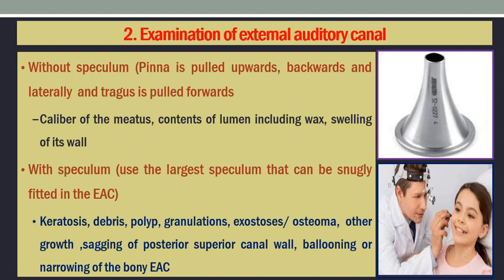You can also see swelling of the cartilaginous external canal. With the speculum, use the largest one that can be snugly fitted in the external canal to look for keratosis, debris, polyps, granulation tissues, exostosis or osteoma in the medial part, and other growths. Sagging of the posterior superior canal wall is usually seen in acute mastoiditis, due to inflammation or periostitis of the floor of the mastoid antrum. Sometimes ballooning can also be seen, or narrowing of the bony external canal due to osteosis, osteoma, exostosis, or inflammatory conditions.